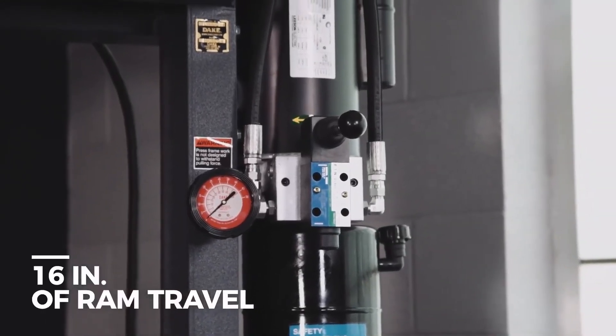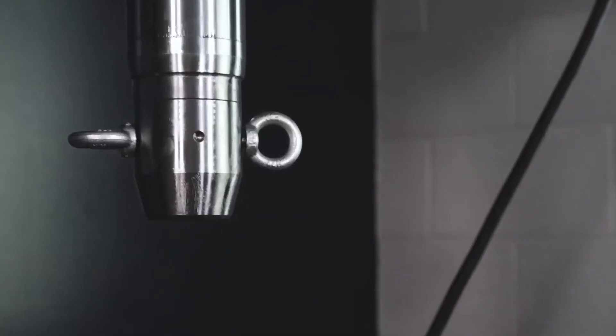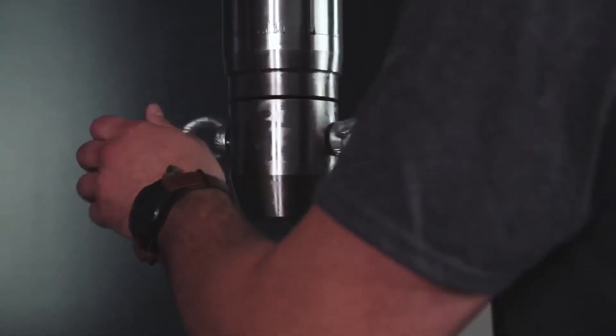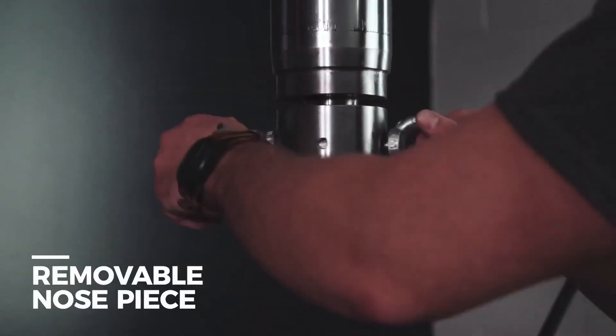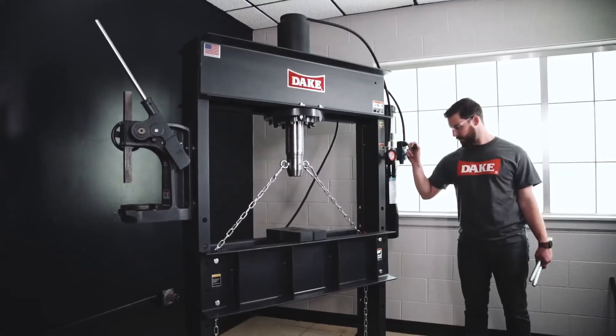16 inches of ram travel are easily controlled by a joystick lever operated ram advance. The 50DA Hydraulic Press has a removable nose piece to add tooling and the ability to lift and lower the table with chains attached to eyes at the end of the ram.